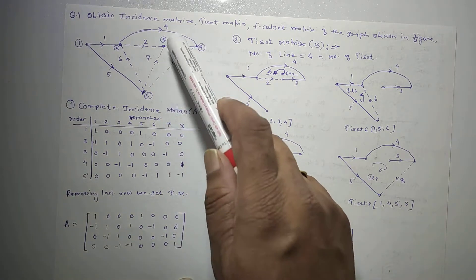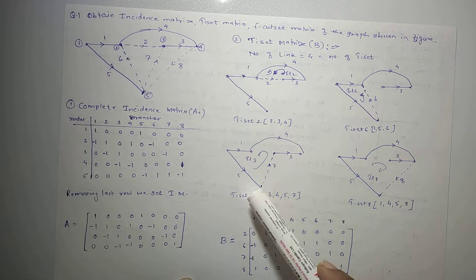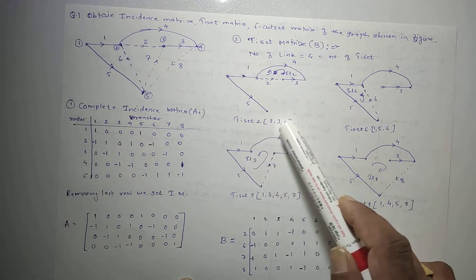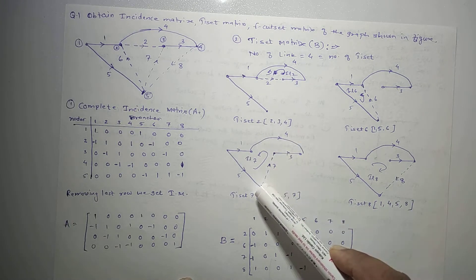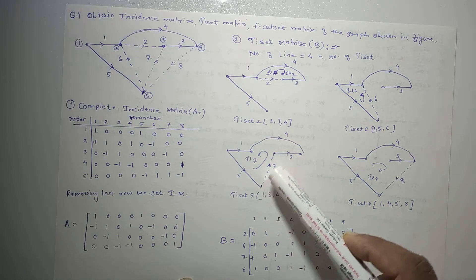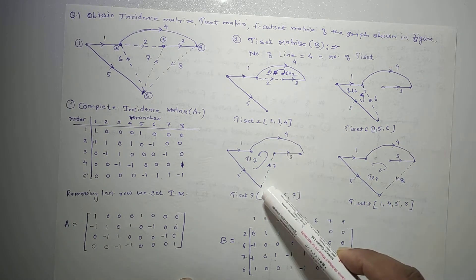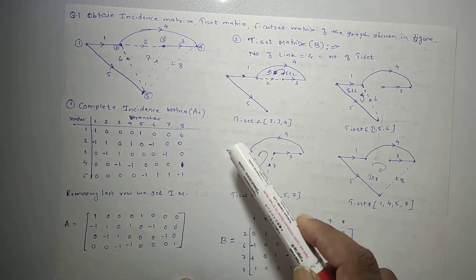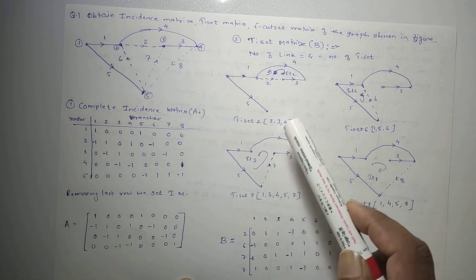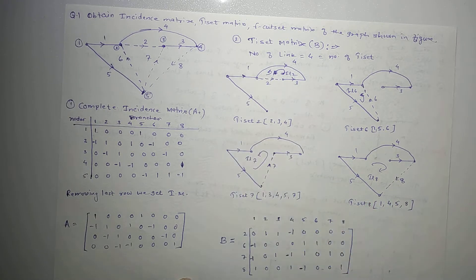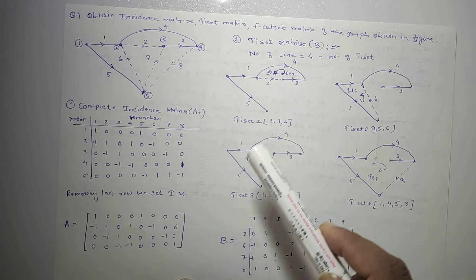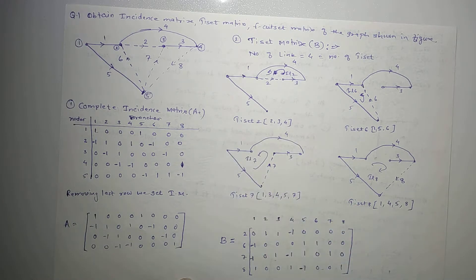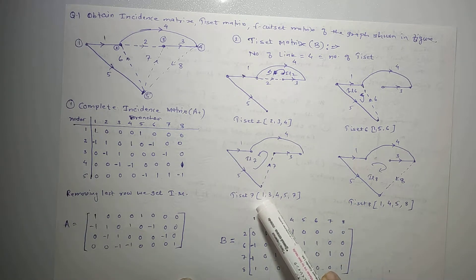Then tie set 7: draw the tree again and place link number 7. When link number 7 is placed, it forms a closed loop through branches 1, 3, 4, 5, and 7. So tie set 7 is formed by branches 1, 3, 4, 5, and 7.